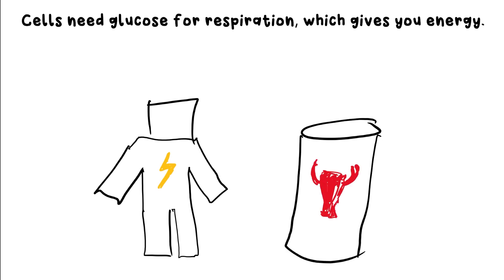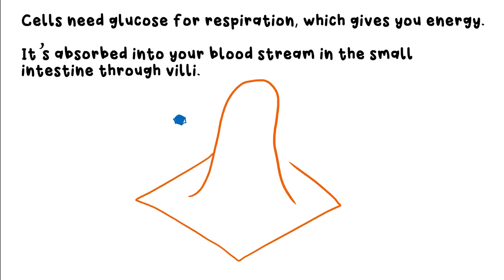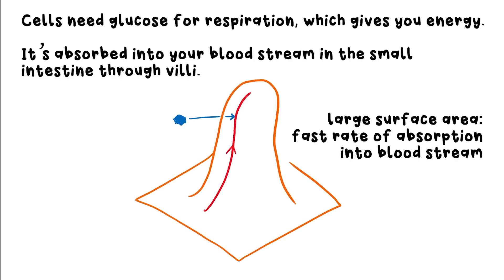If you drink a sugary drink, it will have lots of glucose in it which goes through your digestive system and gets absorbed into the bloodstream by the villi in your small intestine. These are cells that have a lumpy shape so they have a large surface area, meaning nutrients can be absorbed at a fast rate.